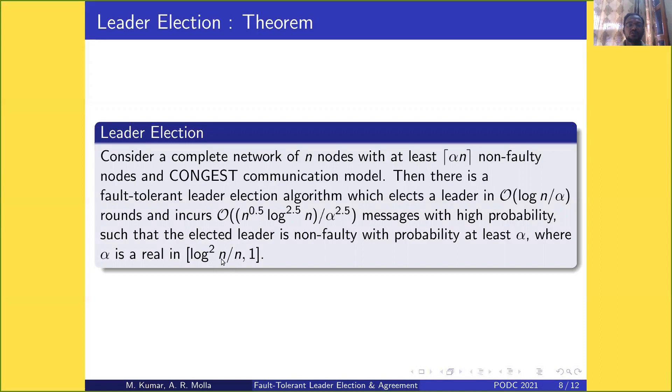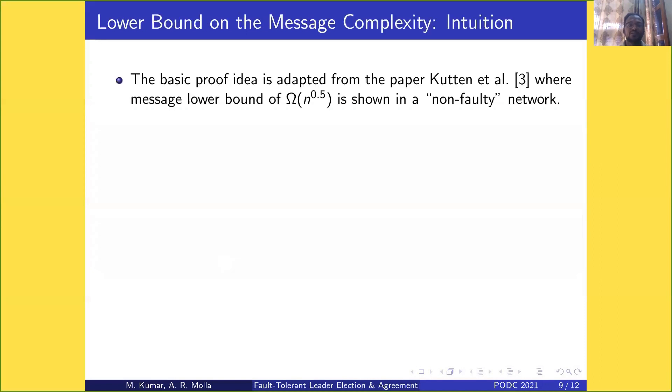The intuition for the lower bound in leader election: the basic proof idea is adapted from Kutten and others, where a message lower bound of Ω(n^0.5) is shown in a non-faulty network. We improved the lower bound to Ω(n^0.5 / α^1.5) when there are (1-α)n to n faulty nodes.